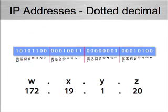An IP address essentially contains two pieces of information: it identifies which network the computer is on, and it provides a unique ID for that computer. The address consists of 32 ones and zeros in binary form. These are divided into four groups of 8, referred to as octets. We convert these ones and zeros into decimal numbers, because four decimal numbers are much easier to deal with than 32 binary digits.